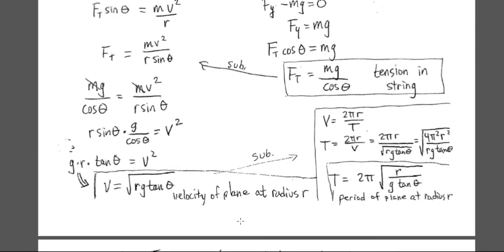What is the period of the circle — how much time does it take to go around that circle at that speed? We know that velocity equals circumference divided by the period, so solving for T and substituting in the velocity we found, it simplifies to 2 pi times the square root of R over G tan theta. So an object swinging around on a string at radius R and angle theta will have a period calculated by this equation.